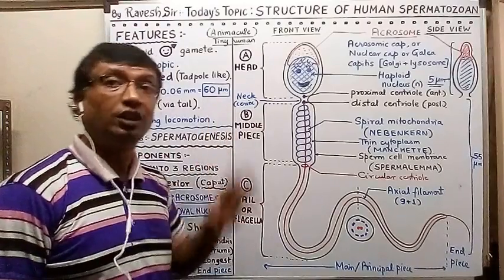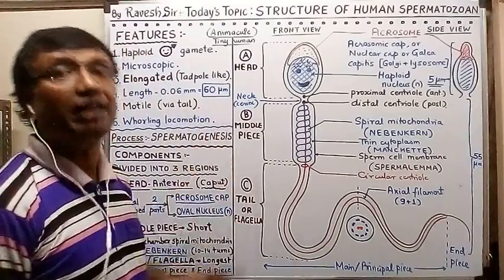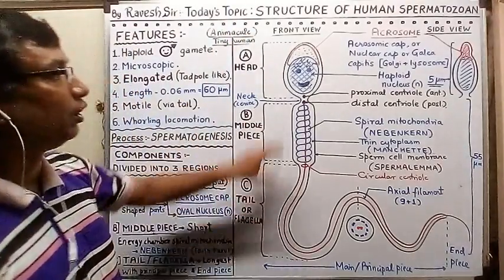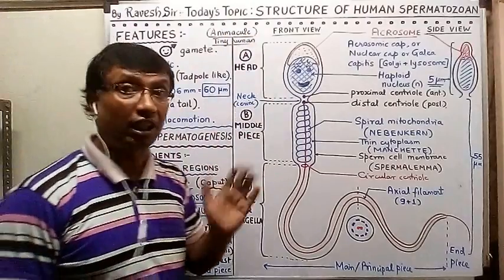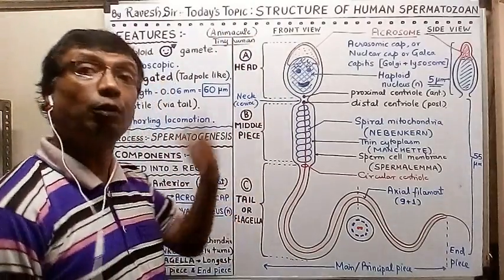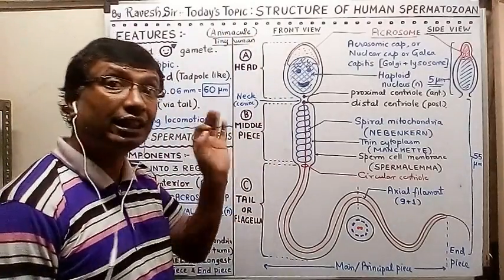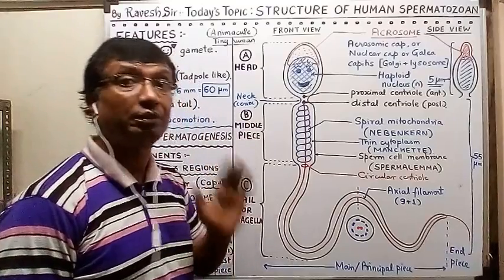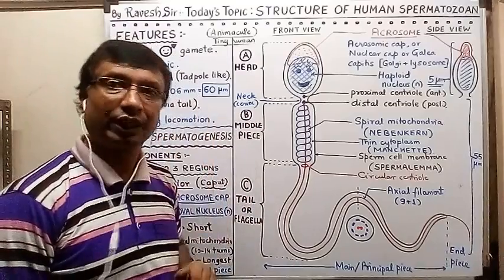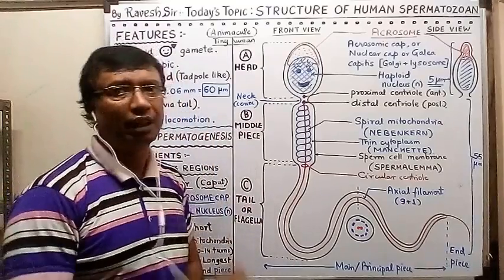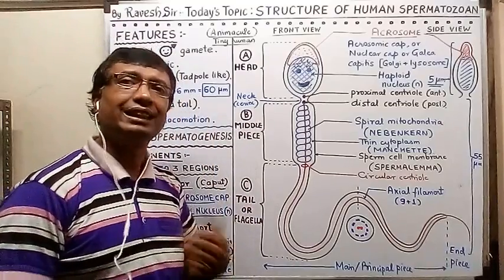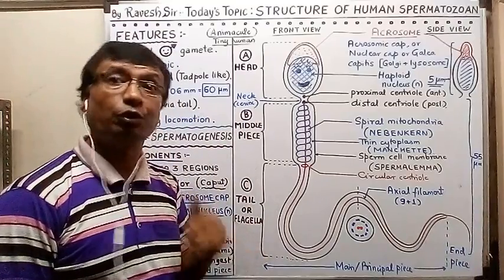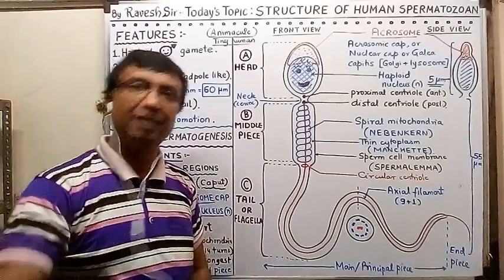We hope you will be able to draw the sperm nicely and correctly with proper proportions. Diagram-based questions are asked from sperm as well as ovum, so be careful with the labels. Next time we will cover spermatogenesis and oogenesis, followed by fertilization. Take care, thanks!